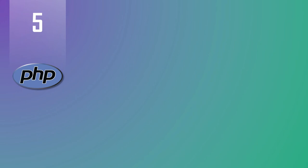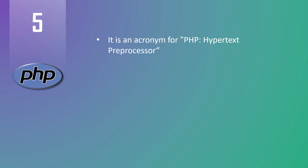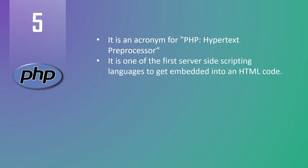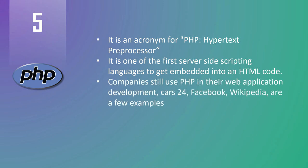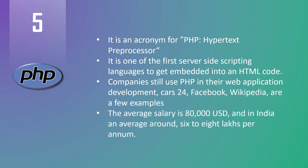At number five we have PHP. PHP is an acronym for PHP Hypertext Preprocessor. It is a widely used open source scripting language and one of the first server-side scripting languages to be embedded into HTML code. Companies still use PHP in their web application development — Cars24, Facebook, and Wikipedia are a few examples. The average salary of a PHP developer is $80,000 US dollars, and in India an average PHP developer earns around 6 to 8 lakhs per annum.